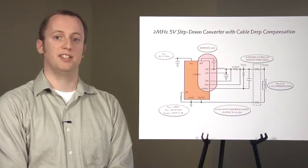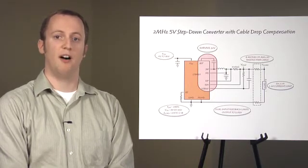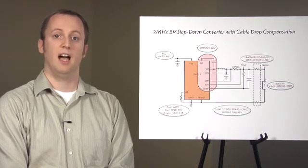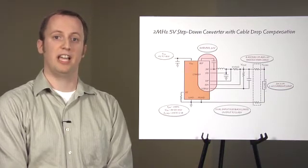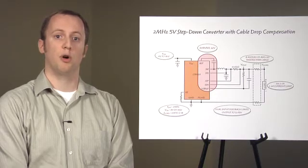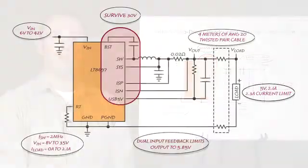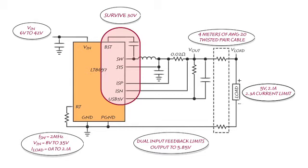Automakers demand robust ICs when nodes are routed off the PCB onto long cables. Ideally, any node tied to a cable should survive a short to ground or to the auto battery. The LT8697 has accurate and programmable output current limit that both makes the IC survive a short to ground and limits power dissipation at the point of fault. All pins tied to the LT8697's output have ABS-MAX ratings of at least 30 volts, so the LT8697 can survive an output short to battery.